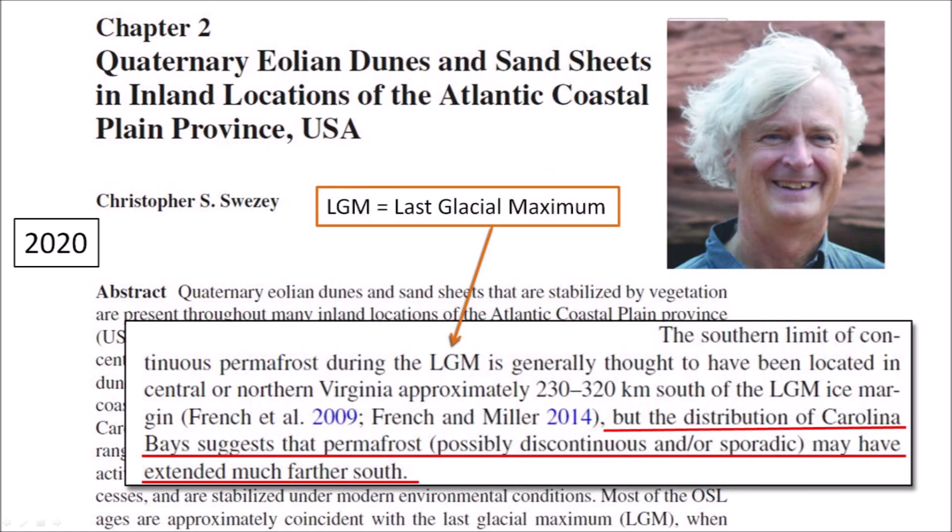The idea that the Carolina Bays originated as thaw lakes from permafrost is discussed in a book about dunes and sand sheets of the Atlantic Coastal Plain by USGS geologist Christopher Suisi. Suisi suggests the presence of Carolina Bays in North and South Carolina implies those states had permafrost at one time, even though two different publications say the southern limit of continuous permafrost during the last glacial maximum was in central or northern Virginia. The Carolina Bays can be found in Georgia and as far south as northern Florida, where there was clearly no permafrost; furthermore, permafrost lakes are not known to have mathematically elliptical geometry.